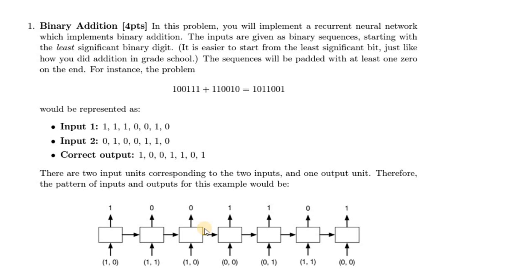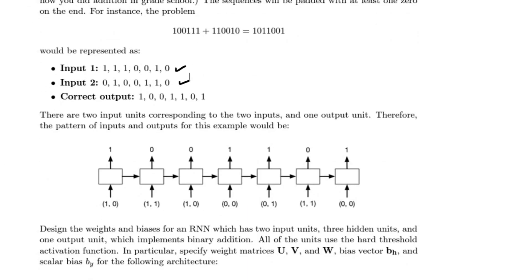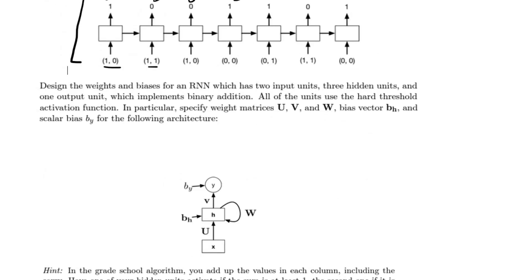This problem is taken from the internet and I will put the link in the description. To give the context: we will have two input strings and we have to perform binary addition. To perform binary addition there is always a carry step involved. The hint is there is going to be an input vector and an output value, and we have to model this entire process using an RNN, which is a vanilla RNN.